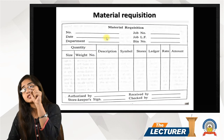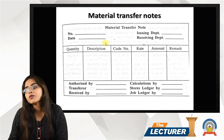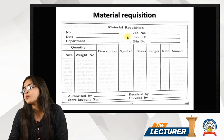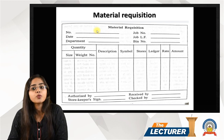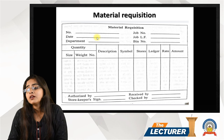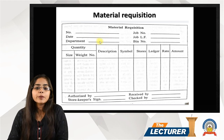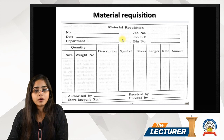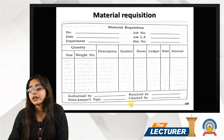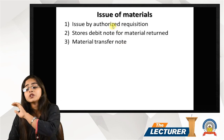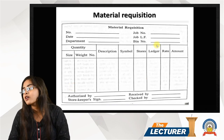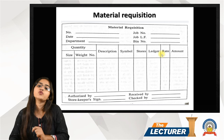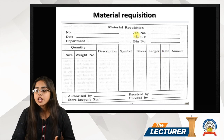The material requisition document includes: first, the date. The date is particularly recorded in the department of store keeping and purchase department. Obviously, the name of the department is written. Then comes the job number — how is the job and how the material requisition is issued for this job number. Then comes the job ledger folio — the job department has a ledger folio number.